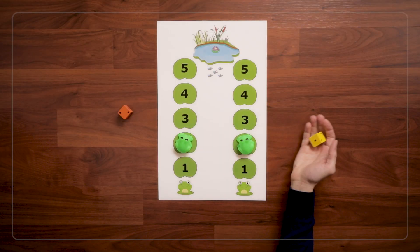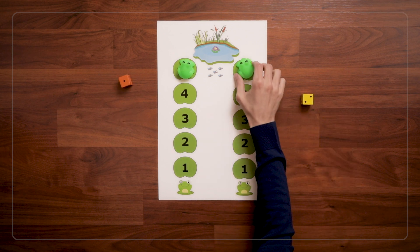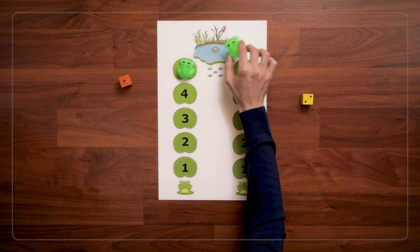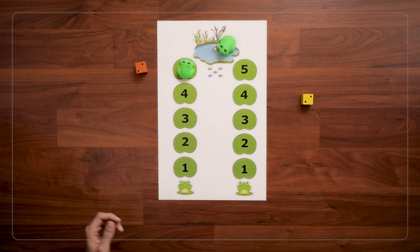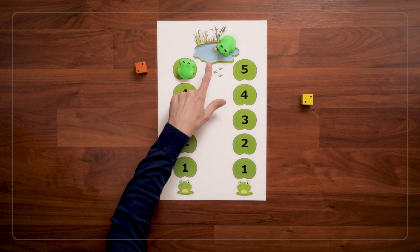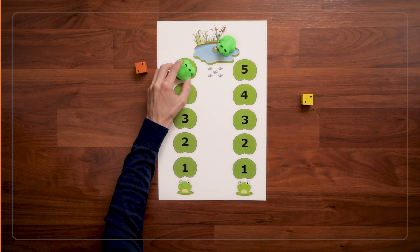So keep rolling and hopping until you get to the pond. And kids can swim around with their frog in the pond. You can play that you need to land exactly on the pond, or that even with a roll greater than what you need, you still get to the pond. It's up to you. Feel free to change the rules or make up your own rules along the way.